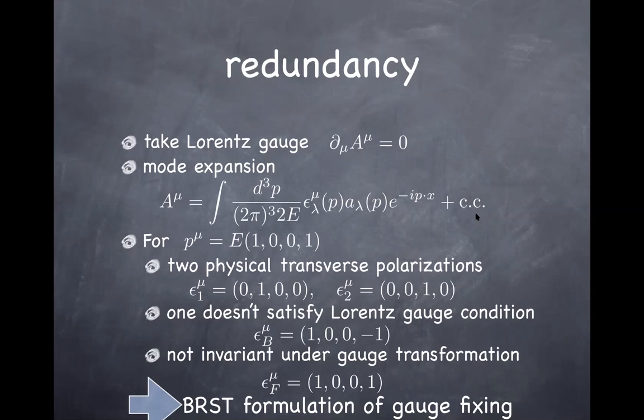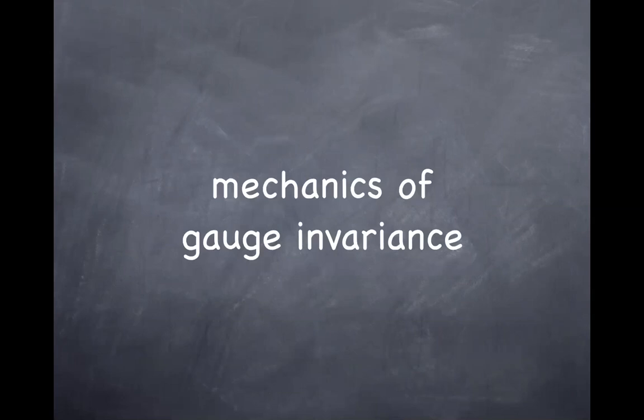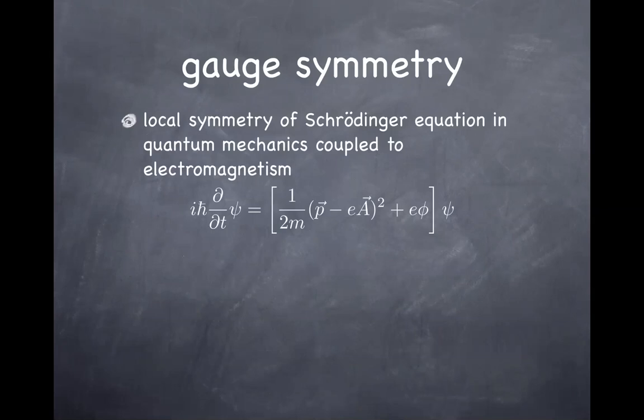We will come back and talk more details about this later — how it works in Hilbert space — making sure there's nothing unphysical in there. Here I'm just describing it in terms of operators. So far it's just motivation; now we talk about the mechanics of gauge invariance: how exactly gauge invariance works. This is something you've seen before, so it's mostly a refresher.